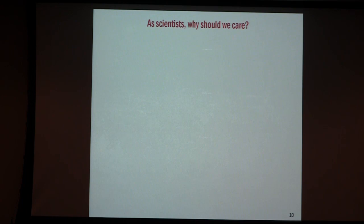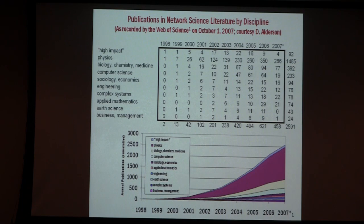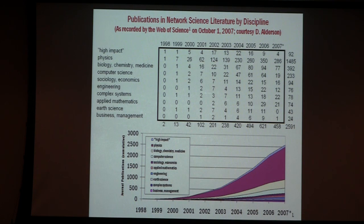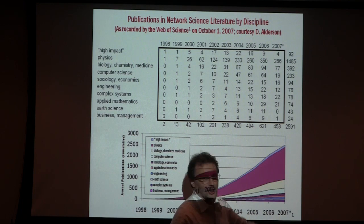Why should we care that there is something called network science out there? As a scientific discipline, if you count the number of publications, there is exponential growth, and physicists really get a large chunk of it.